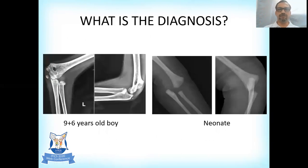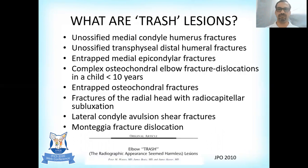Here are two radiographs. The one on your left is a nine-year six-month-old boy with a history of injury, and the other one is a neonate. Are they the same? Is it just an elbow dislocation or something else? We'll discuss those findings as we move further.